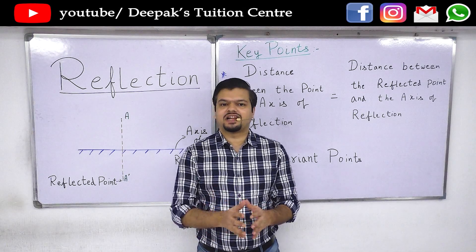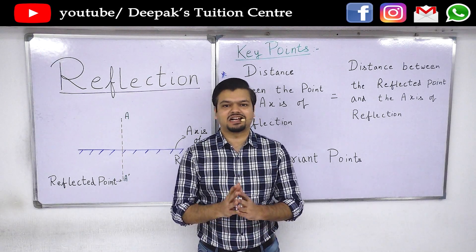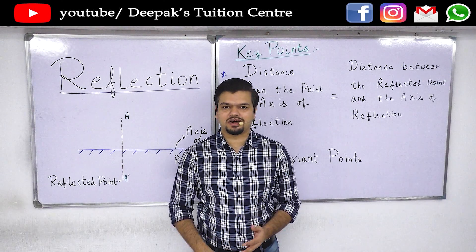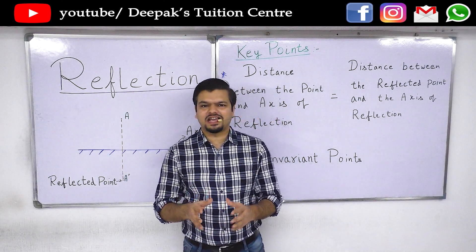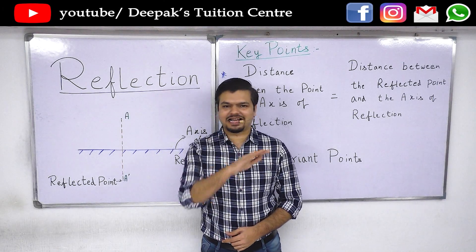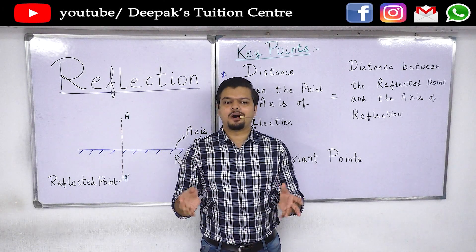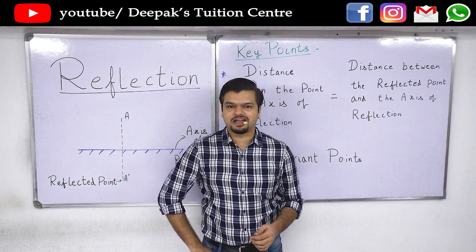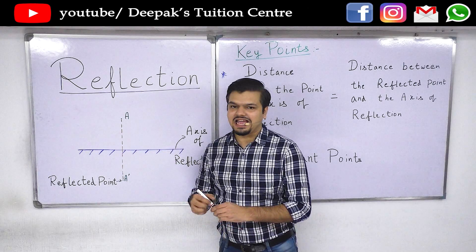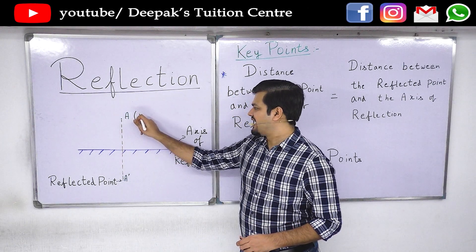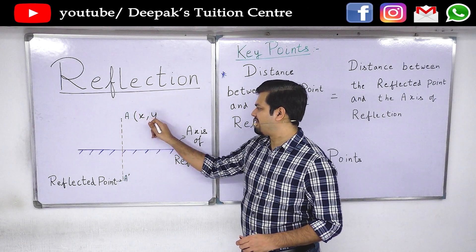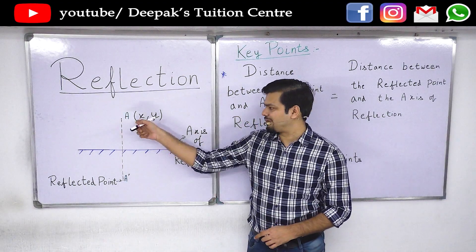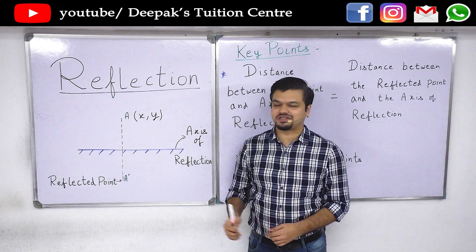So the coordinate geometry concepts need to be remembered correctly. Basically, in coordinate geometry there are two axes — x-axis and y-axis. Every point is represented by its coordinates (x, y). The x-axis coordinate is called the abscissa, and the y coordinate is also called the coordinate.